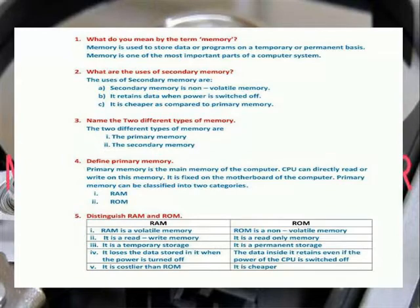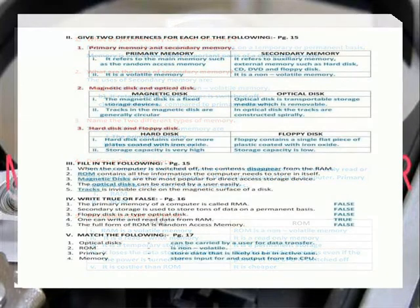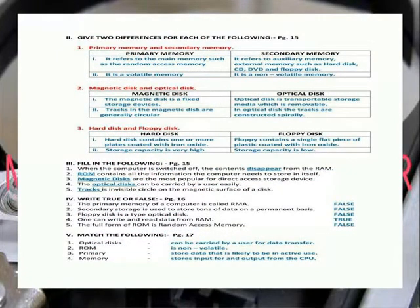Give two differences for each of the following. Primary memory: it refers to the main memory such as random access memory. It is a volatile memory.